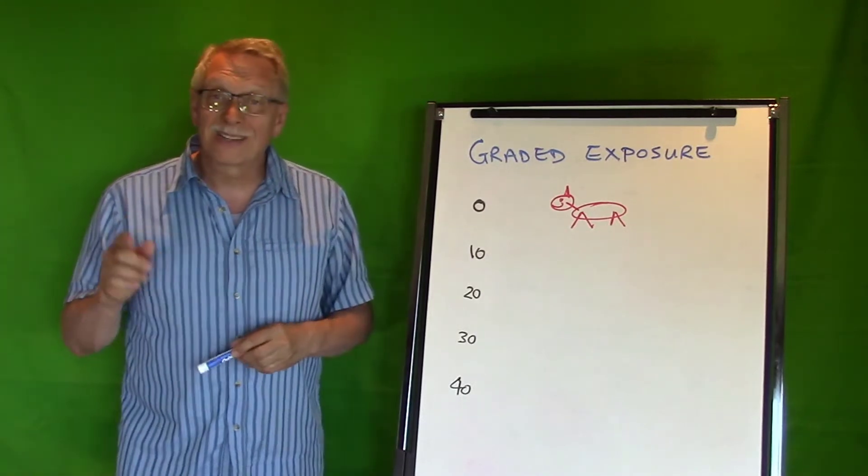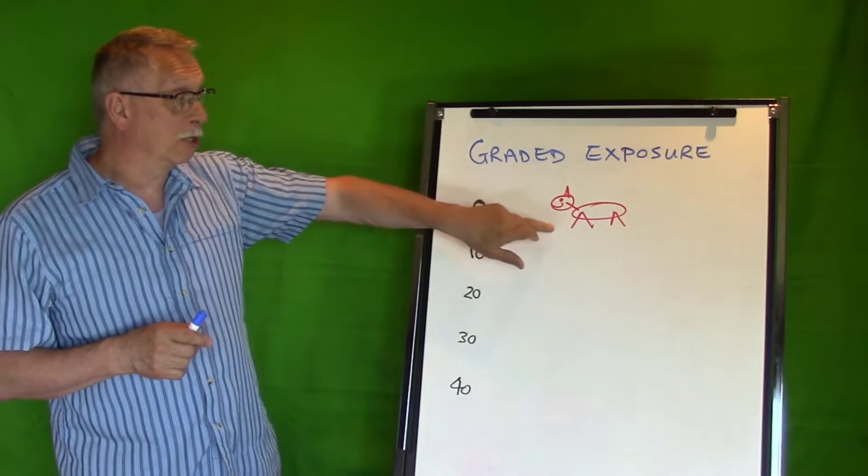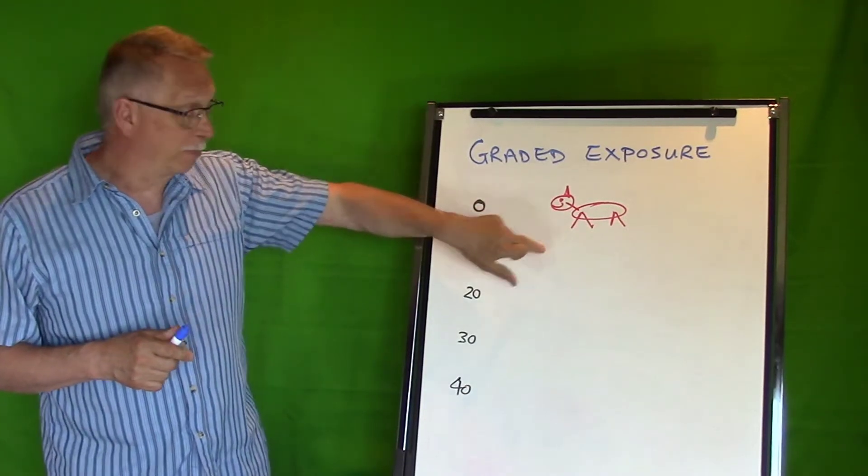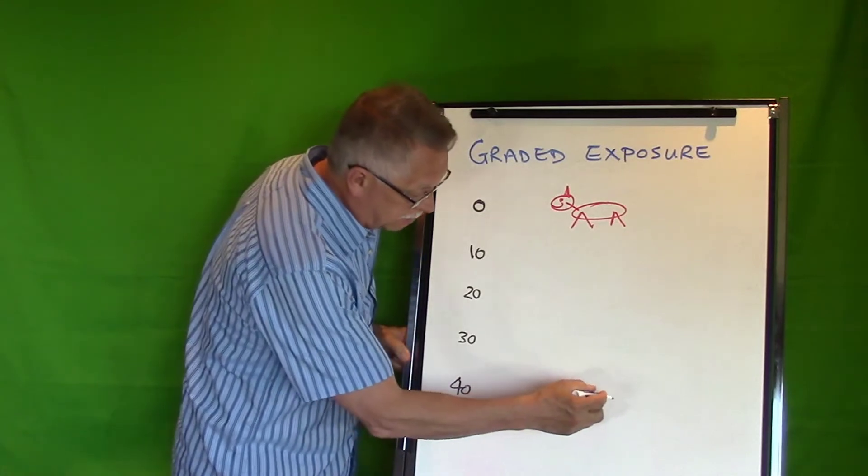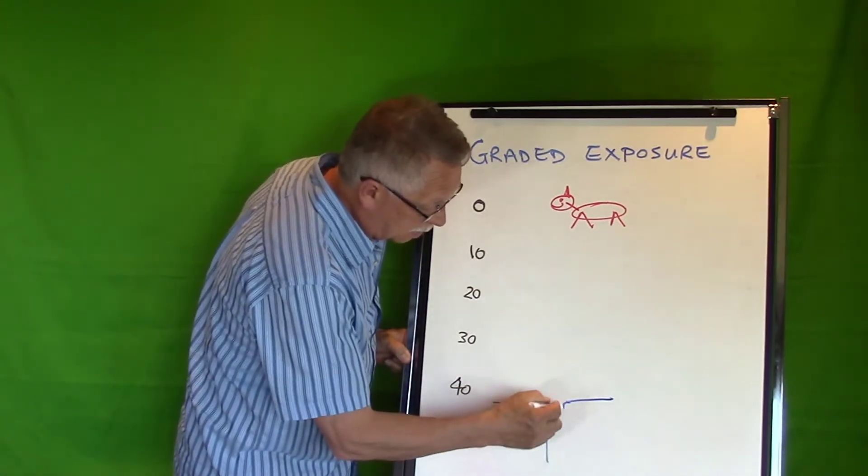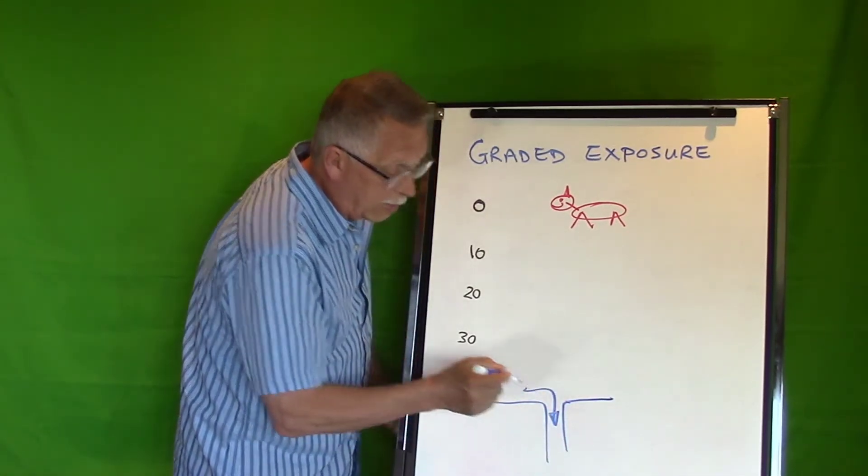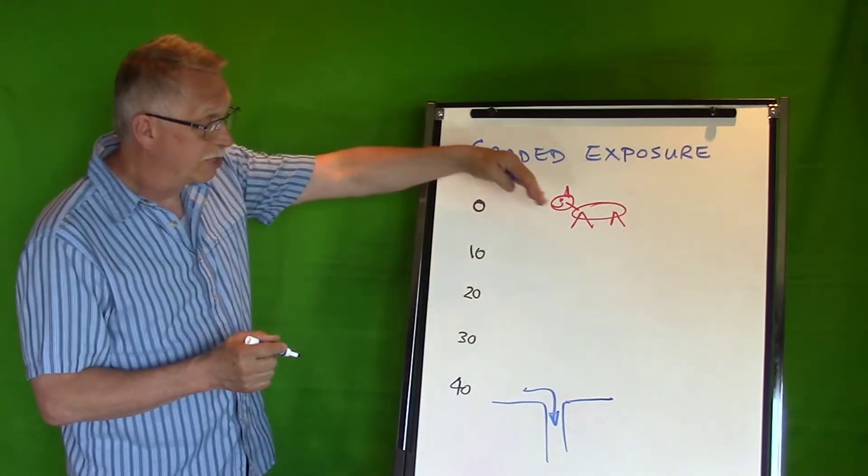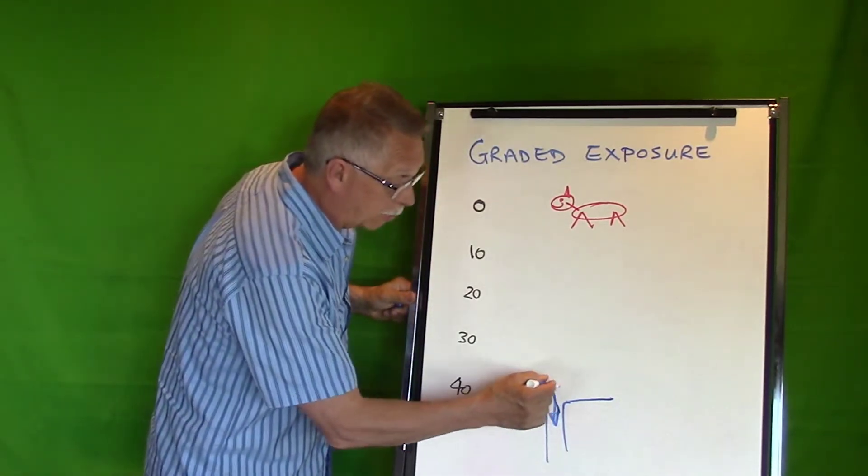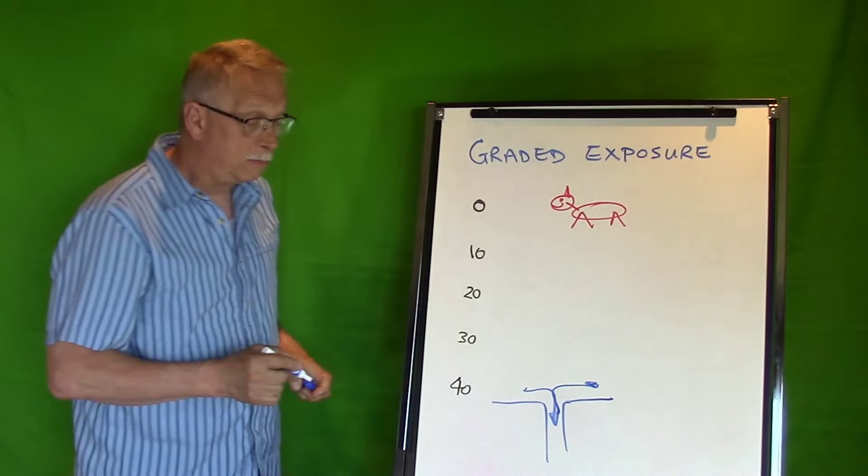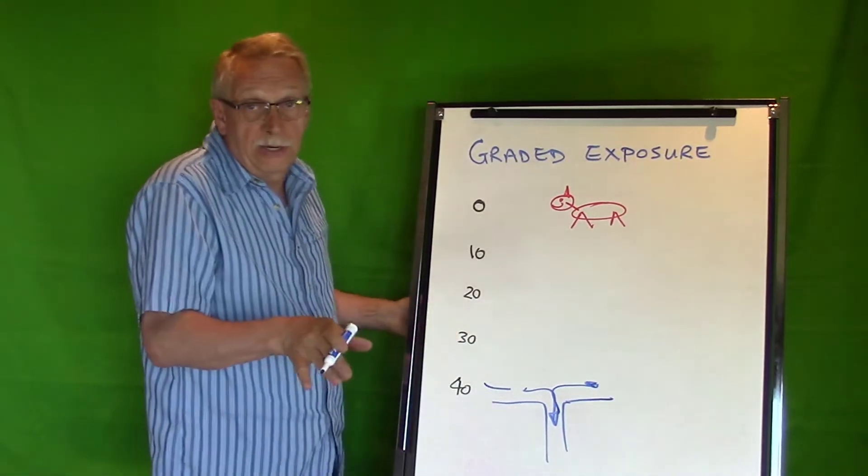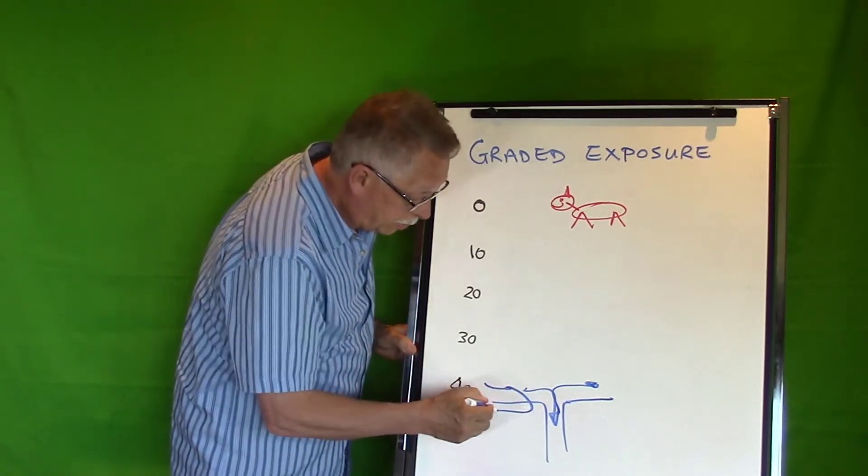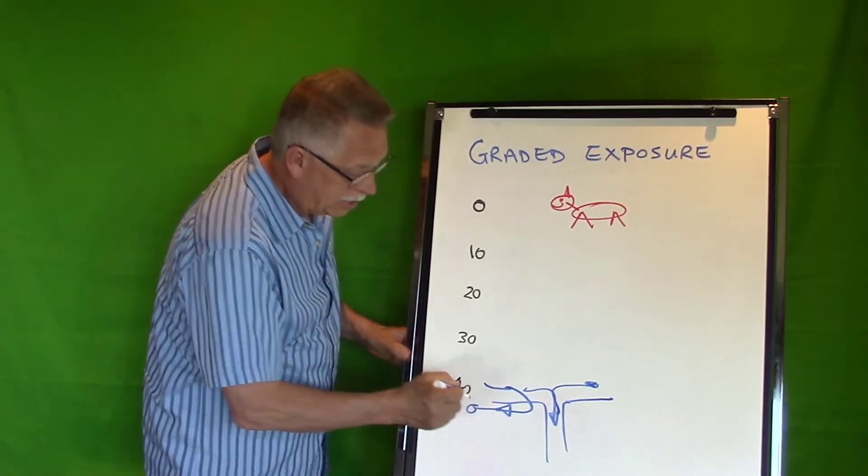If that doesn't work—you're still too close to the stimulus—then as you're walking down the road, turn into a driveway. Once the dog has passed, come back out and keep going.